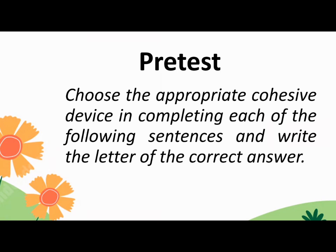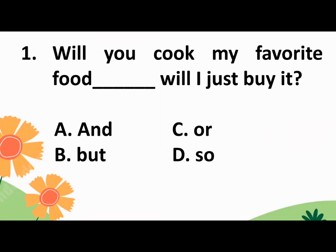As an introductory activity, please accomplish first these pretests. Choose the appropriate cohesive device in completing each of the following sentences and write the letter of the correct answer. Number 1: Will you cook my favorite food? Blank. Will I just buy it? Is it A. And, B. Bought, C. Or, or D. So?